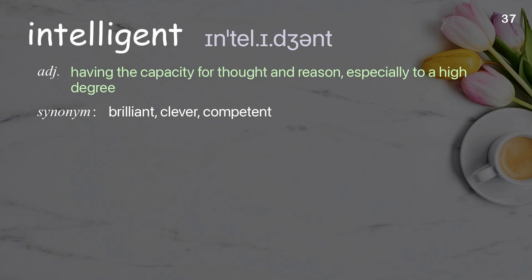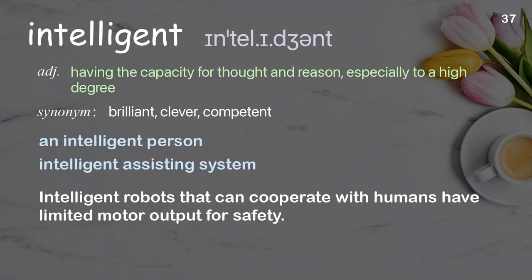Intelligent. Having the capacity for thought and reason, especially to a high degree. Examples: an intelligent person, intelligent assisting system. Intelligent robots that can cooperate with humans have limited motor output for safety.